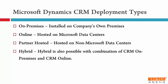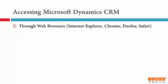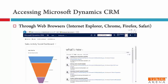So these are the deployment methods available with Dynamics CRM. Now let's see how you can access CRM application. The first most commonly used way to access CRM is through web browser. You can use Internet Explorer, Google Chrome, Mozilla Firefox and Apple Safari. You just need to enter the URL of the web application and you will be able to access CRM with your credentials. You can see in the screenshot this is how CRM web client looks like.